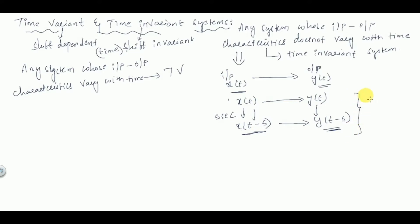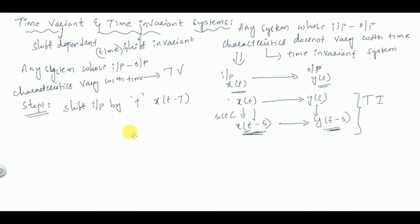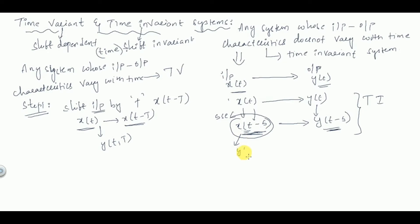To find time invariance, we follow these steps. In step one, we shift the input by T seconds — wherever you find x(t), replace it with x(t-T). The corresponding output is labeled y(t, T).